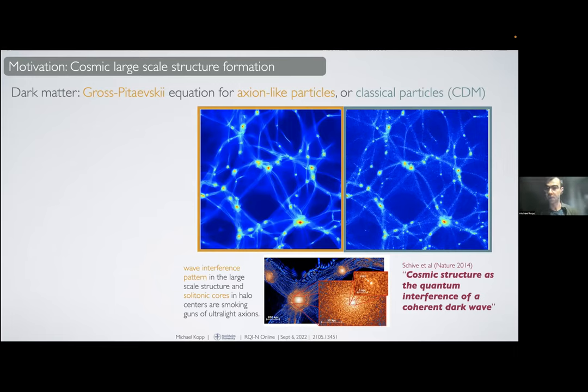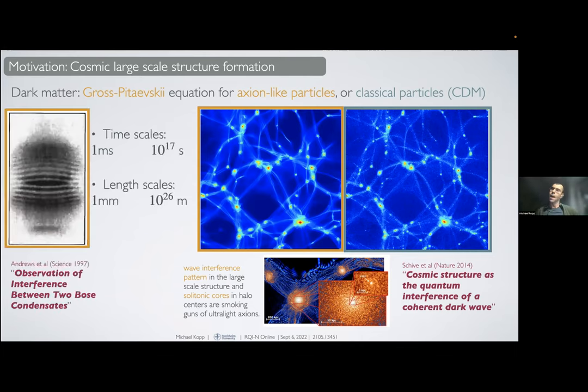Those are features people look for in observations to maybe identify if dark matter is a light scalar field or not. The other situation where we know this description is valid is in the context of Bose-Einstein condensates, where we cool down normal matter so that the de Broglie wavelength becomes very large. But it's very tricky to actually cool it down and keep it in the state where you can see the interference pattern.